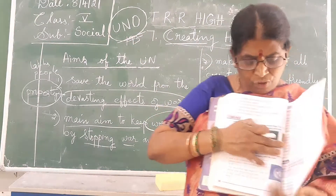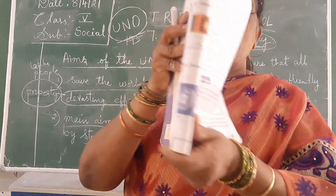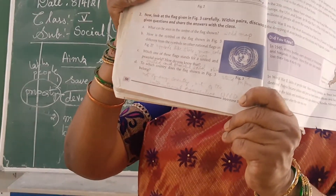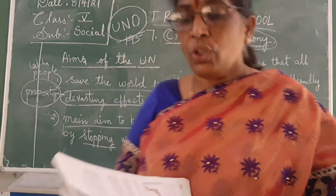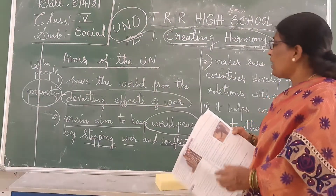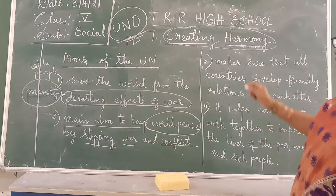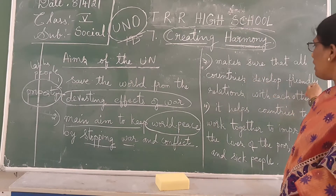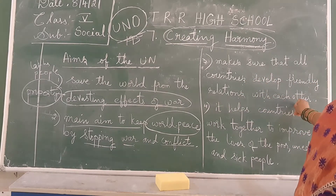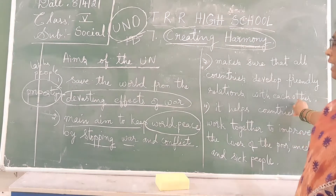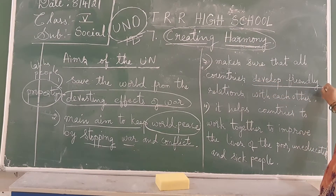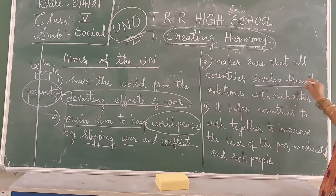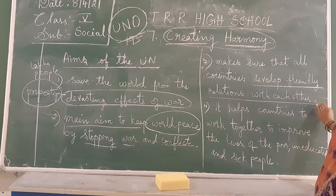Remember the flag also. This is the flag of the United Nations Organization. So this is the main aim of the UNO. And not only that — some more aims are there. Make sure that all the countries develop friendly relations with each other. The UNO will help the countries to develop friendly relations with each other.